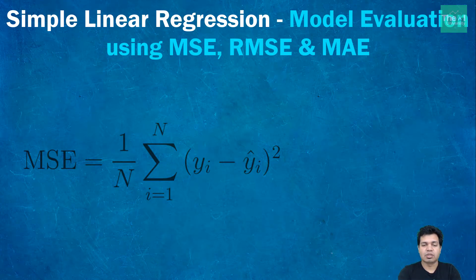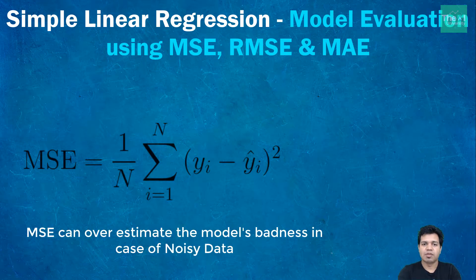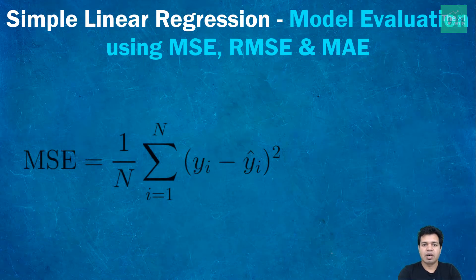The problem with this particular kind of metric is that it can overestimate the model's badness if we have noisy data or bad data. If the errors are smaller than one, then it may underestimate the model's badness. So in a nutshell, in MSE noise is exaggerated and large errors are punished.